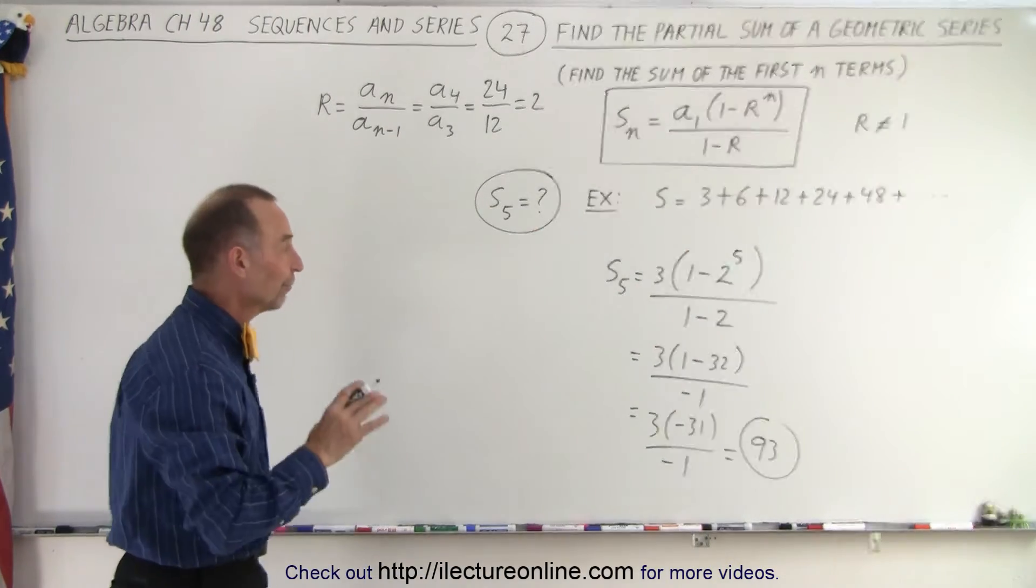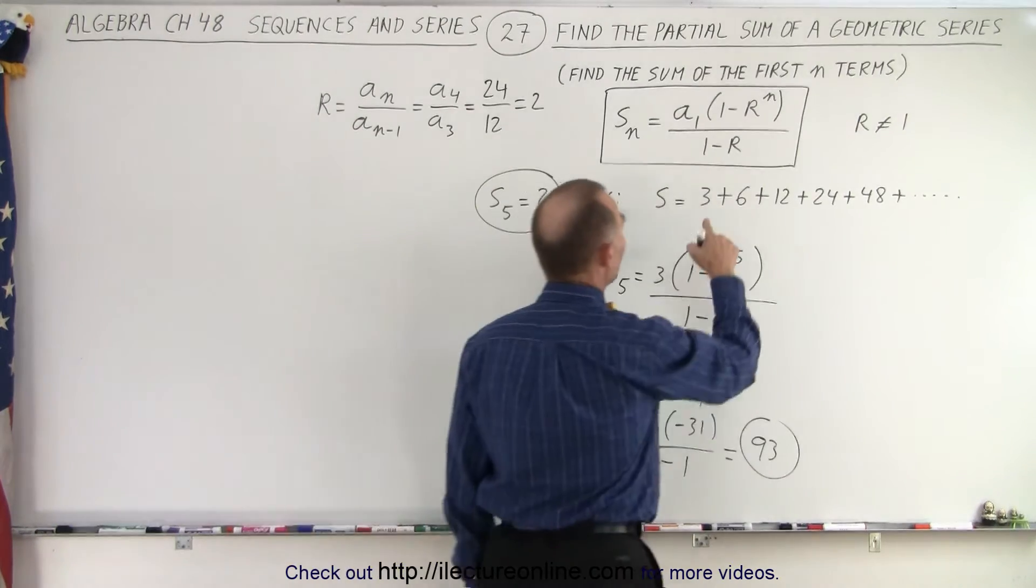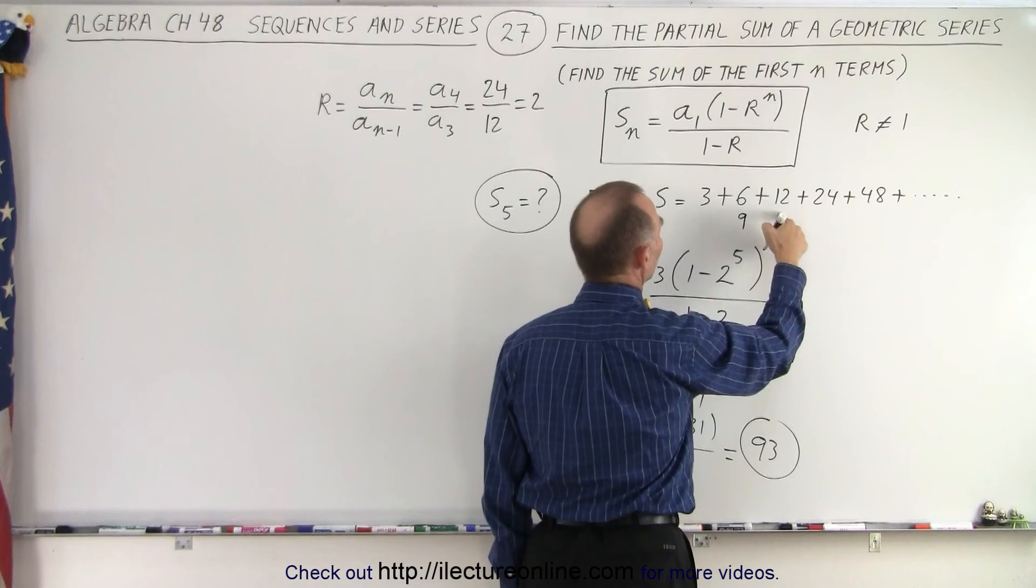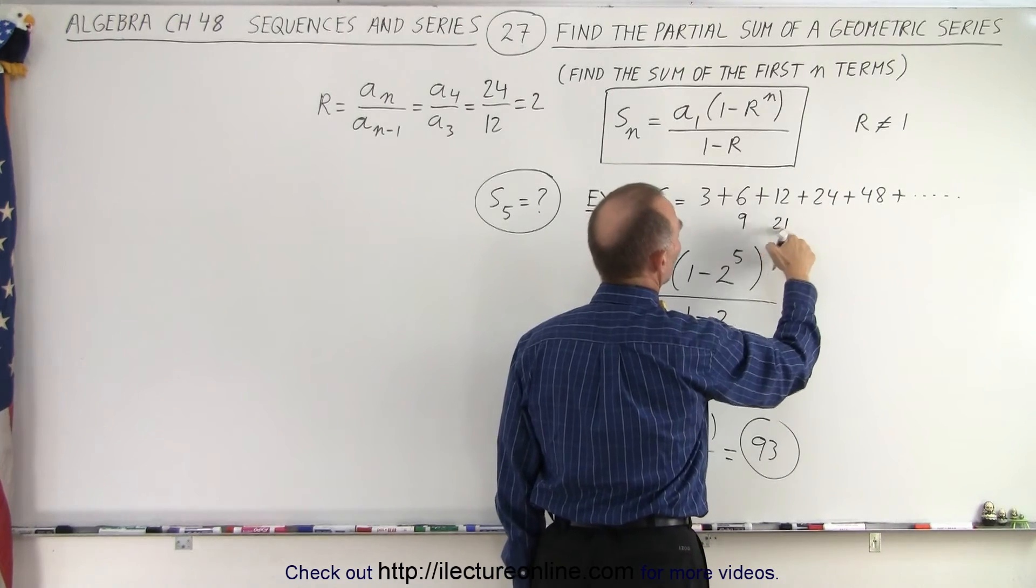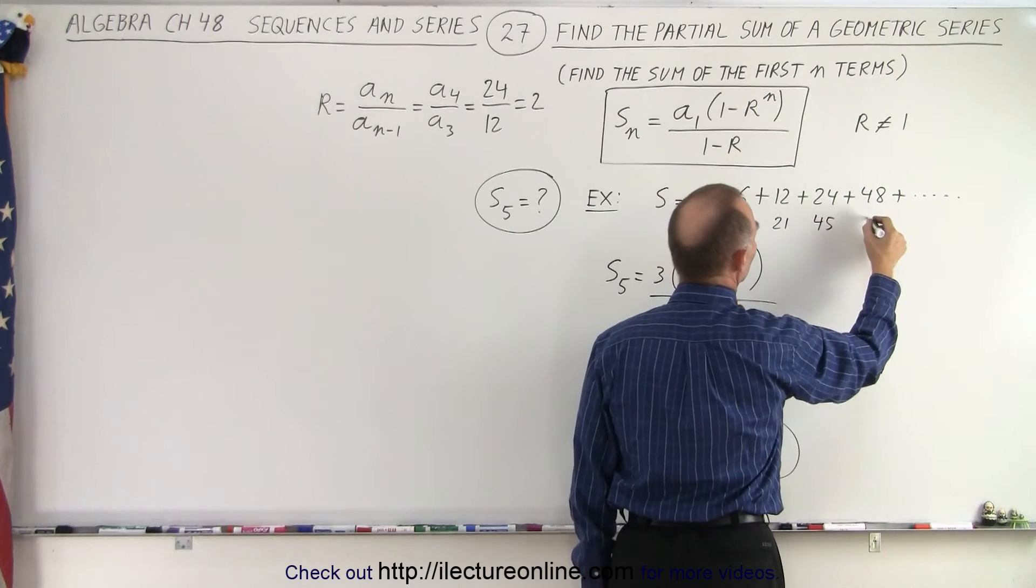93 is the sum of the first 5 terms. Let's verify by adding them up: 3 + 6 = 9, 9 + 12 = 21, 21 + 24 = 45, 45 + 48 = 93.